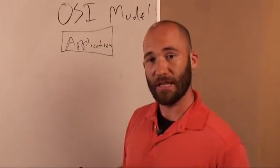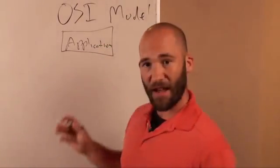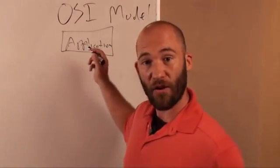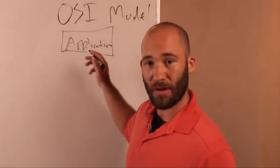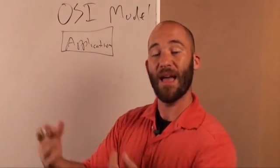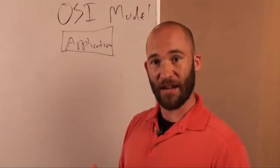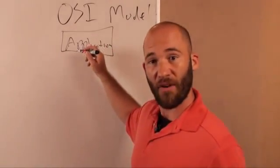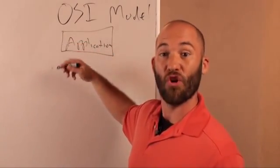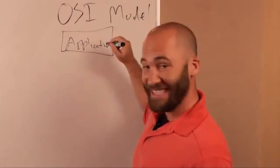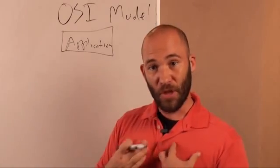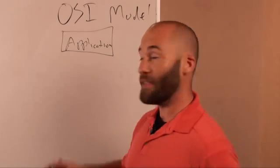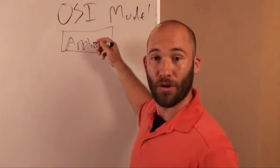The application layer is the layer that the user is actually interacting with. Things like Firefox or Internet Explorer — if you're going onto a website, the application layer for that whole communication is Firefox, Internet Explorer, Safari, Chrome, etc. This is the layer that the user is actually interacting with the information on. If you're doing email, this would be the actual Outlook application.